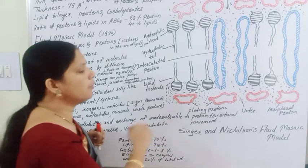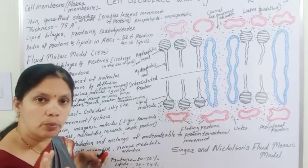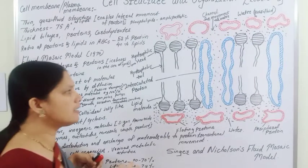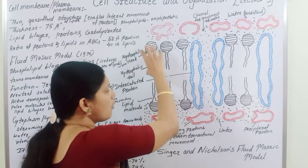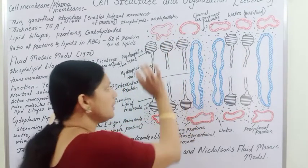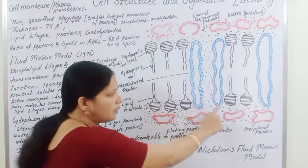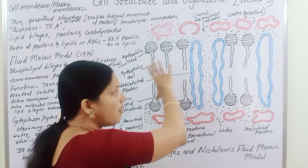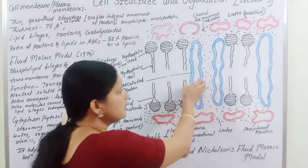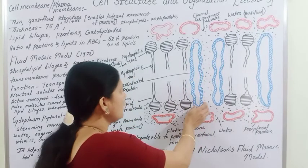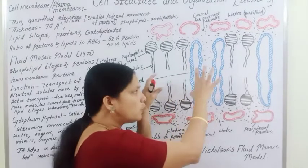According to the fluid mosaic model, the membrane is formed from phospholipid bilayers. As you can see, there are phospholipid molecules with tail regions present. There are also intercalated proteins and intrinsic proteins embedded within the phospholipid bilayer.